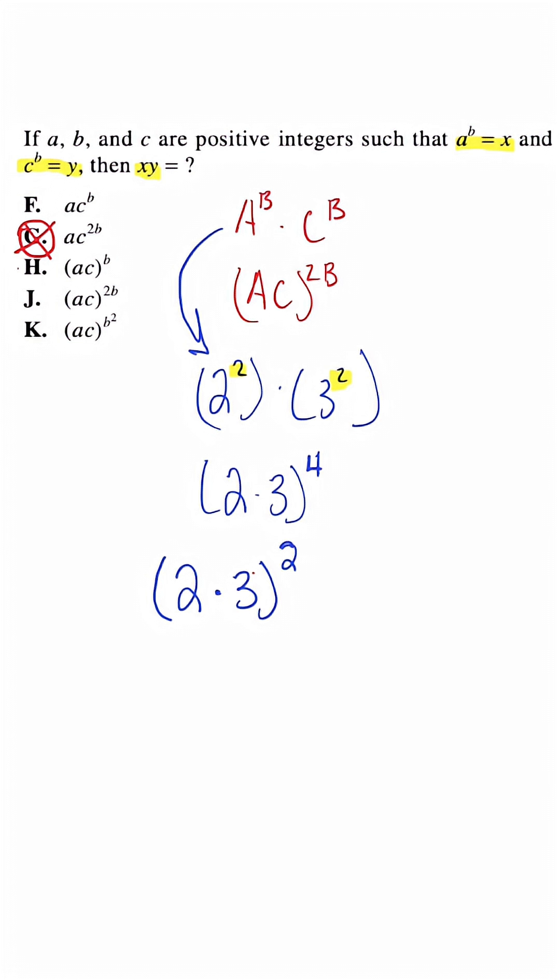And when we simplify this one step further, we'll have the same expression. We'll apply the exponent to each individual base, and this is what we'll have. So this is the reason why the answer choice is going to be answer choice h.